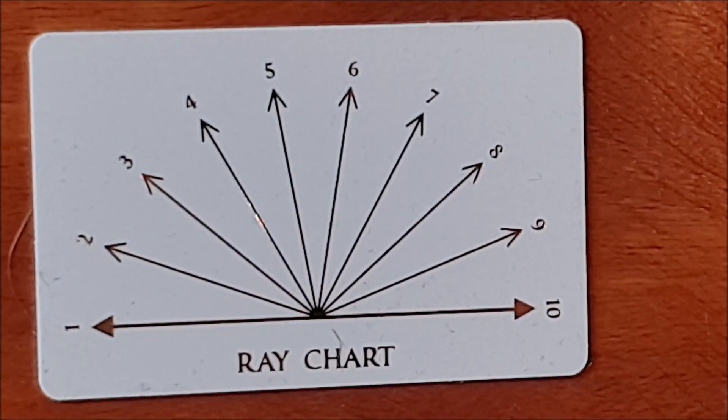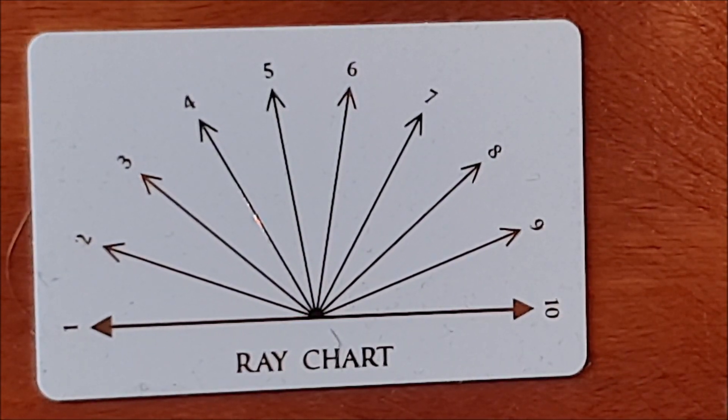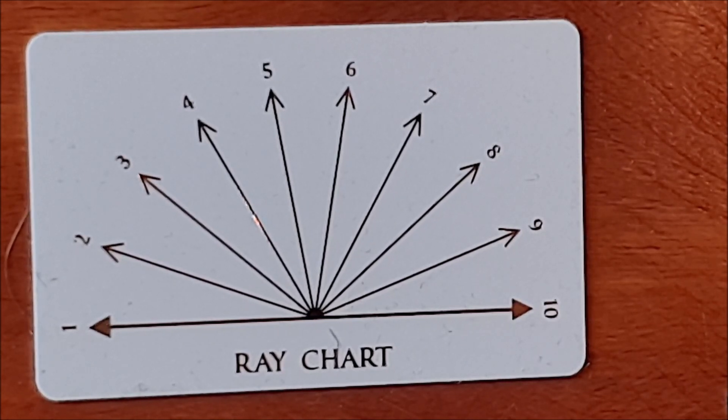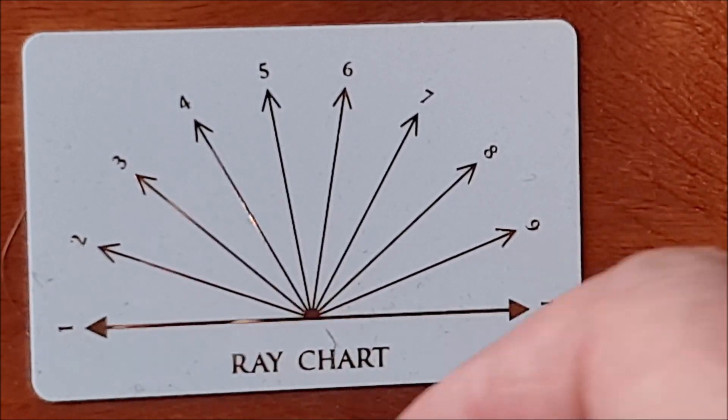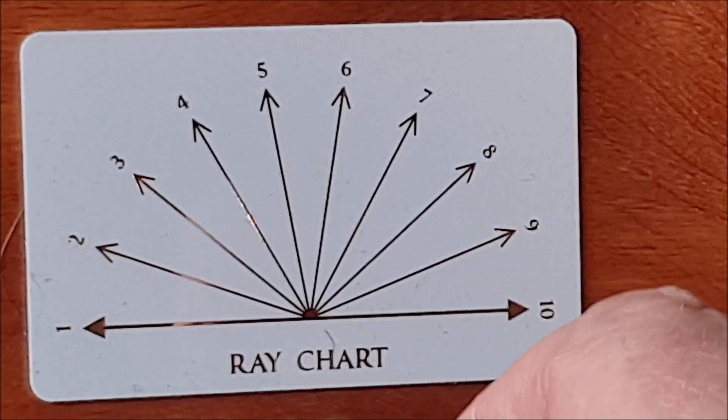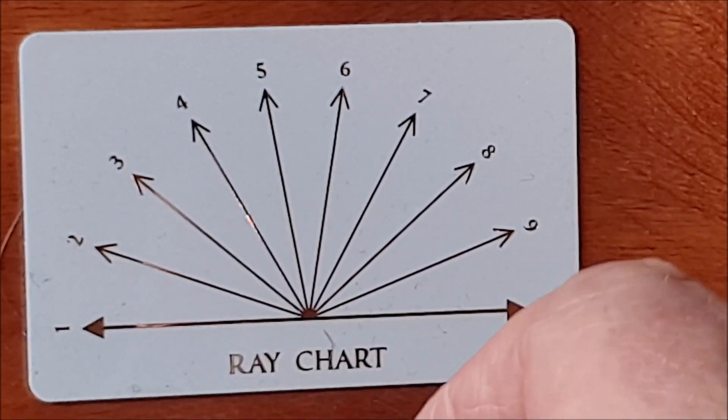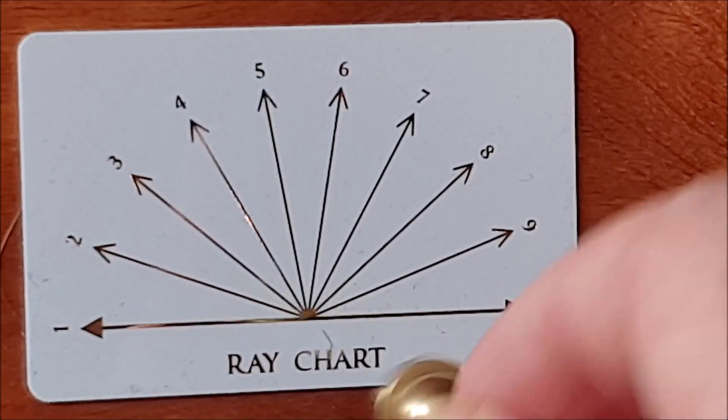This is another one which is kind of useful if you don't need the negative thing, if you just want a 1 to 10. Show me the strength of this energy line on a scale of 1 to 10. Here you would start just in the vertical position and your pendulum would go to whichever one it wants.